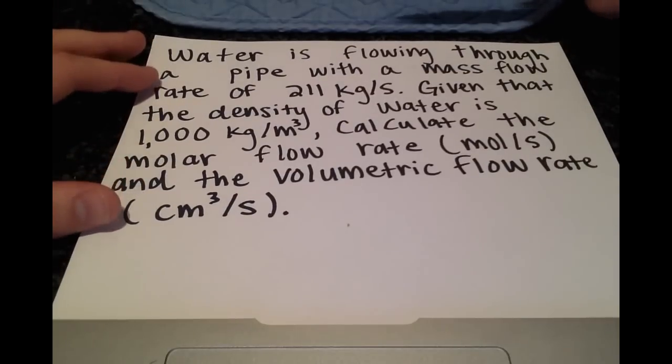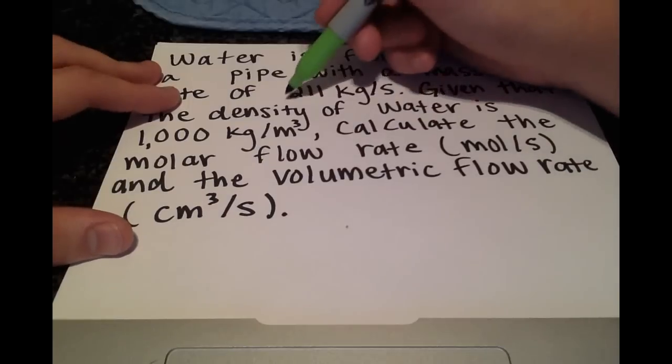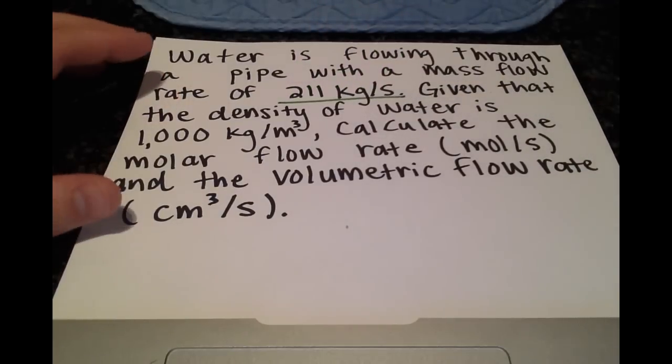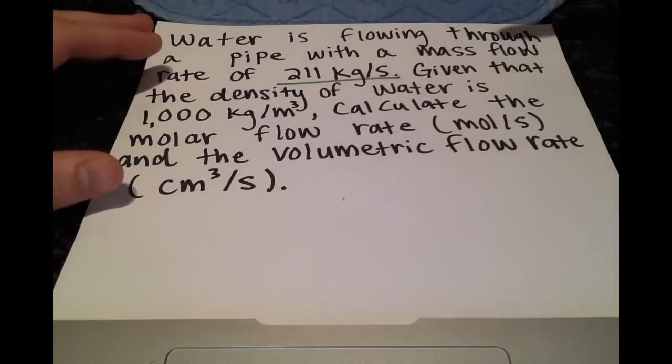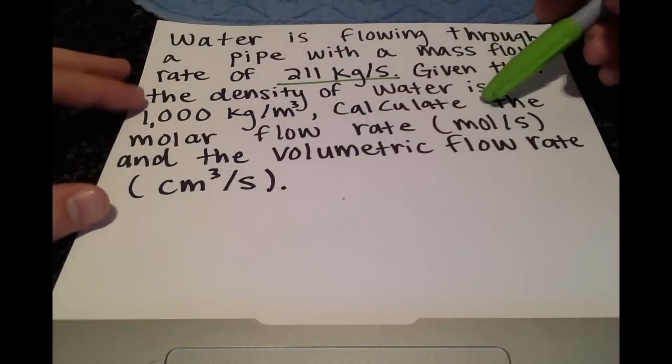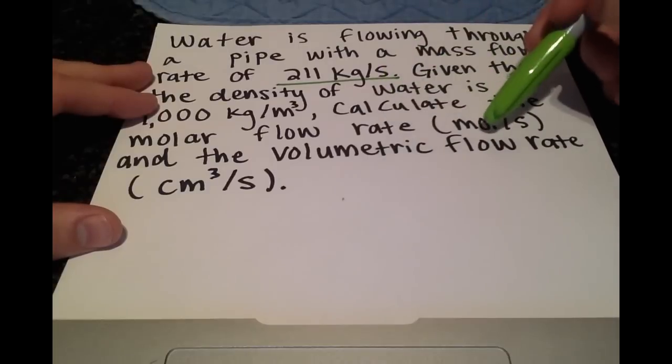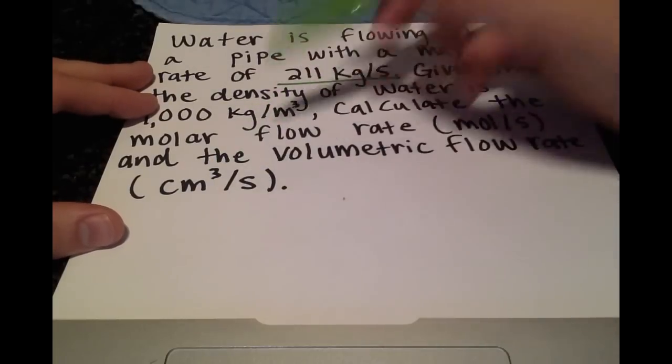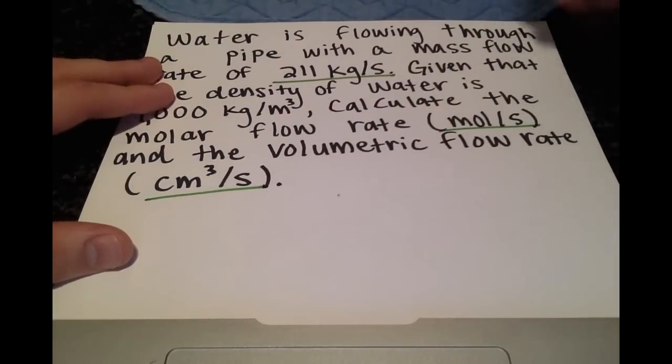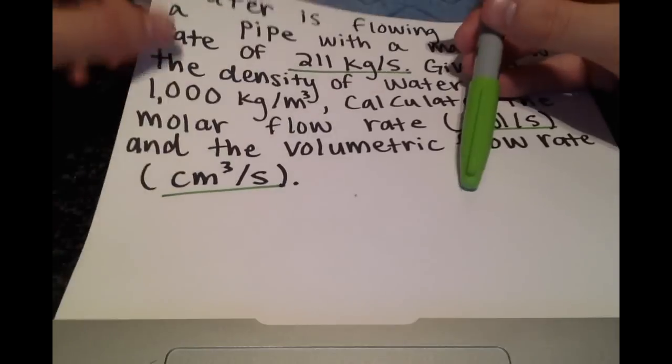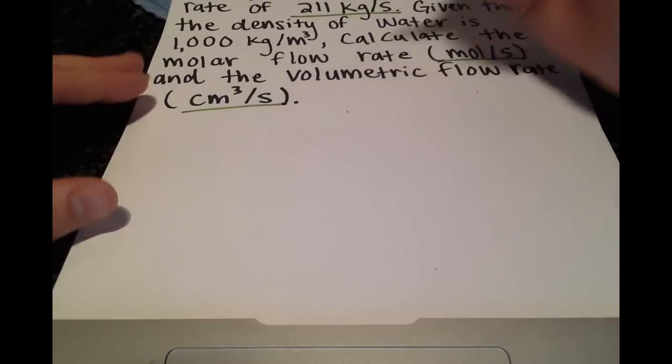So for this problem, we have water flowing through a pipe with a mass flow rate of 211 kilograms per second. We're told that the density of water here is 1000 kilograms per meter cubed, and we want to calculate the molar flow rate in moles per second and the volumetric flow rate in centimeters cubed per second. So it's very important to pay attention to the units. This could have been kilomoles per second, this could have been meters cubed per second.